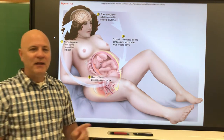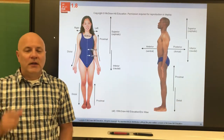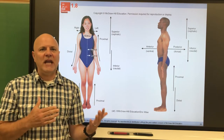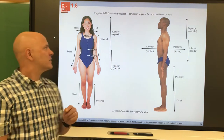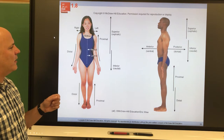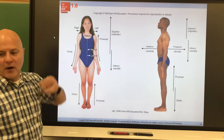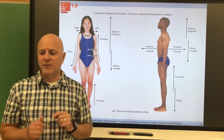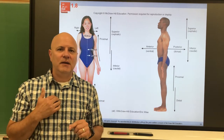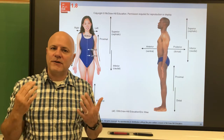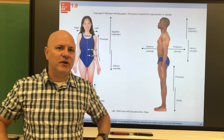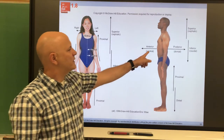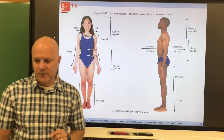Now let's move to anatomical terminology, starting with relative positions — one body part in relationship to another. Superior means a body part is above another; inferior means below. My head is superior to my chest; my chest is inferior to my head. But my chest is also superior to my waist, and my waist is inferior to my chest — it's all relative.